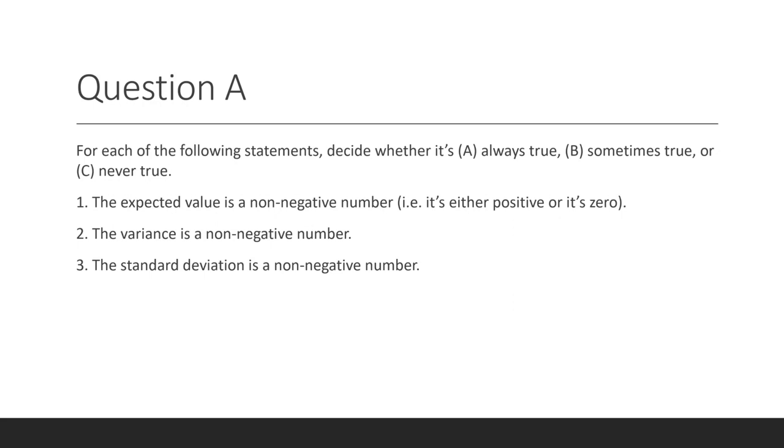Statement one: the expected value is a non-negative number. In other words, it's either positive or it's zero. This is sometimes true. It could be positive, it could be zero, but it could also be negative.